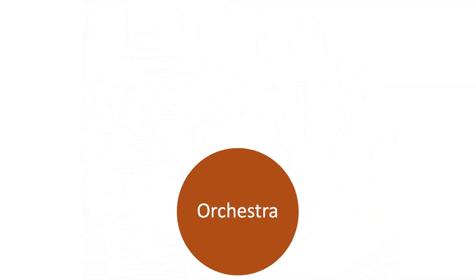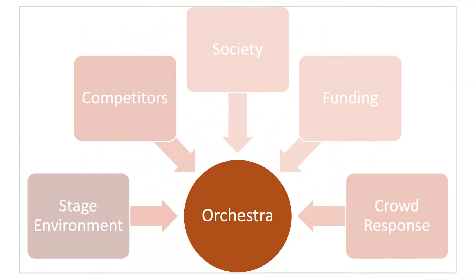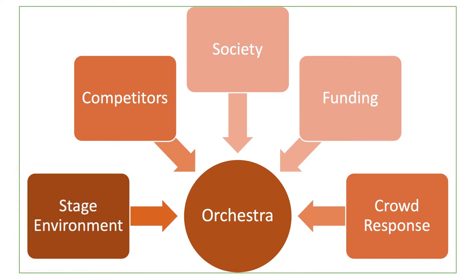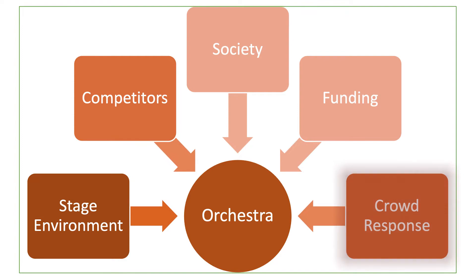Let's go back to our orchestra. There are all sorts of variables pressing upon a system. This could include how hot the stage lights are while they're performing, maybe the funding that they're receiving, or even the crowd response — and those are just the things that the system receives. The orchestra also has internal variables like how much the individuals or sections practice, the leadership, the culture, and the human and section capabilities.